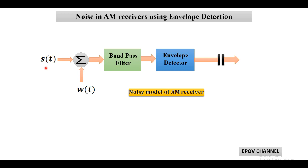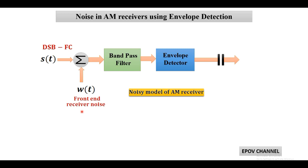During transmission, because of a noisy channel, this standard AM signal is affected by channel noise which is additive in nature and denoted by W(t). This channel noise is also called front end receiver noise.